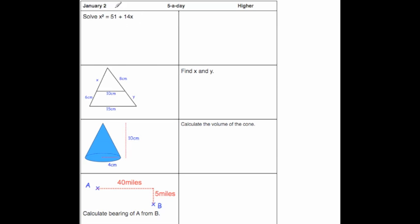Whenever I'm asked to solve something like this, what I tend to do is want to bring it all over to one side. So x squared minus 14x minus 51 equals 0.